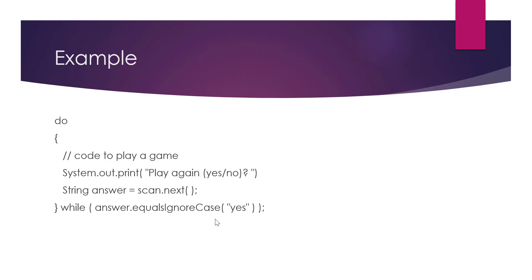Another example for do-while is a game. Inside the do block we have the code to play the game — it executes at least once since the user started the program wanting to play. After the game finishes, we scan their answer and ask do you want to play again. Using the string method equalsIgnoreCase, if their answer is yes we go back to the loop body and play again, repeating until they choose not to.